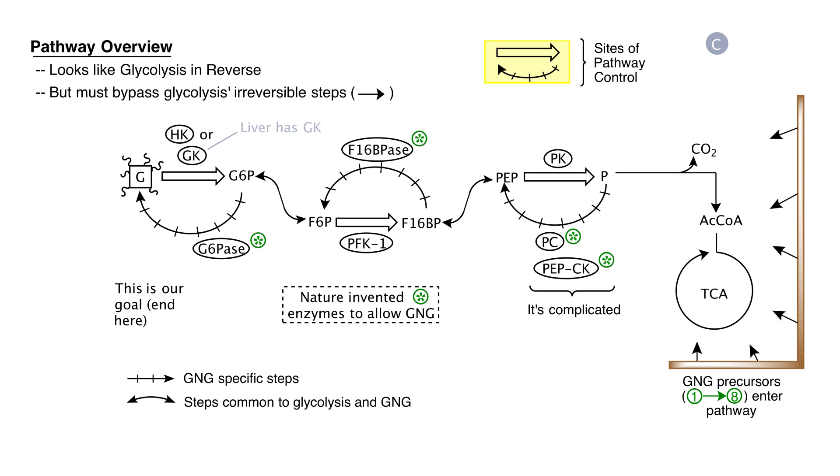We have to find a way in gluconeogenesis to bypass these three thermodynamically irreversible steps. The enzymes that were invented to circumvent the three thermodynamically irreversible steps of glycolysis are shown in green asterisks in this panel. For example, glucose 6-phosphatase hydrolyzes the 6-phosphate from glucose 6-phosphate, converting it to glucose.